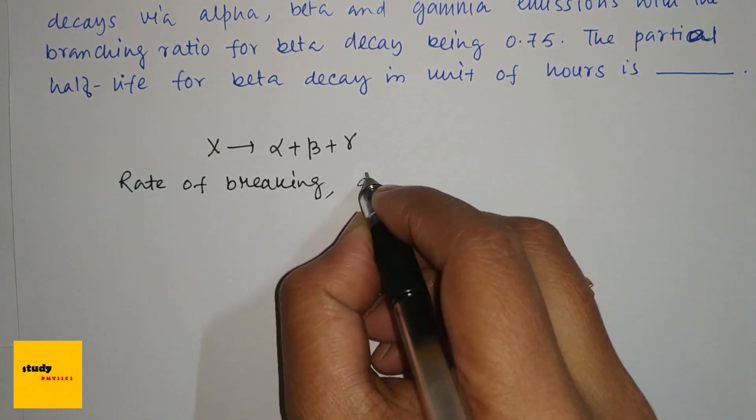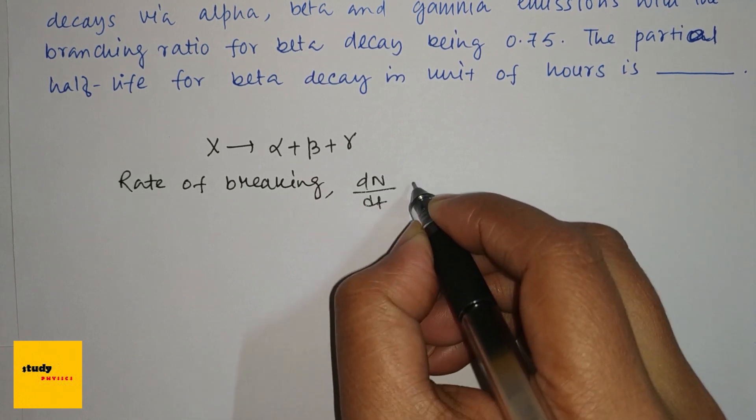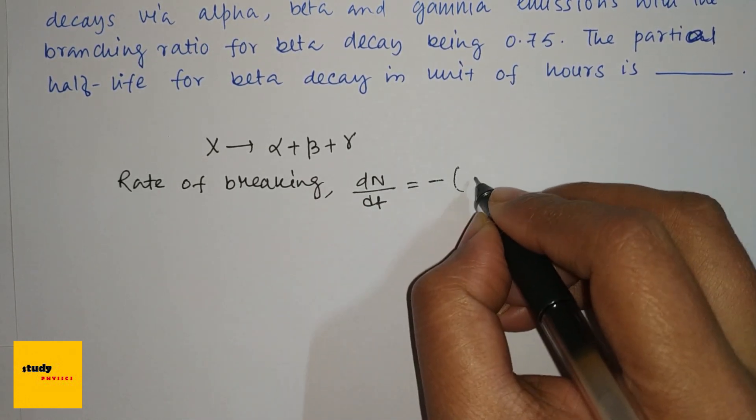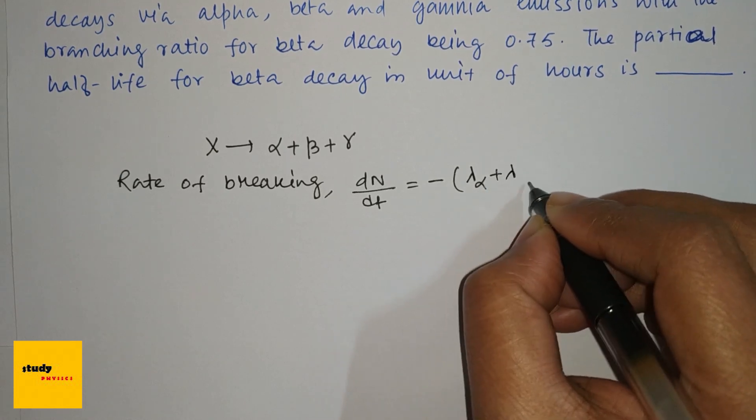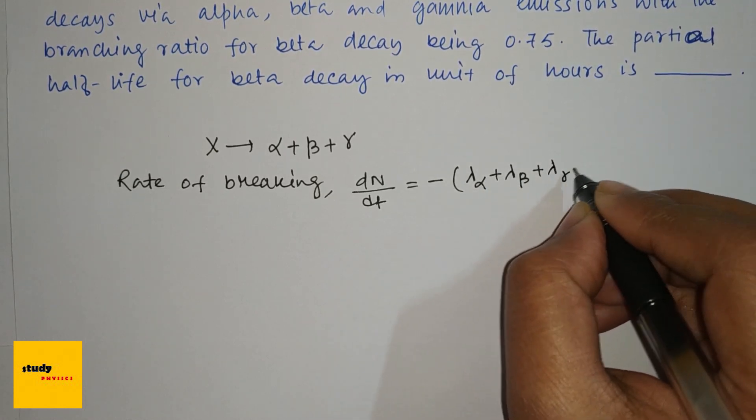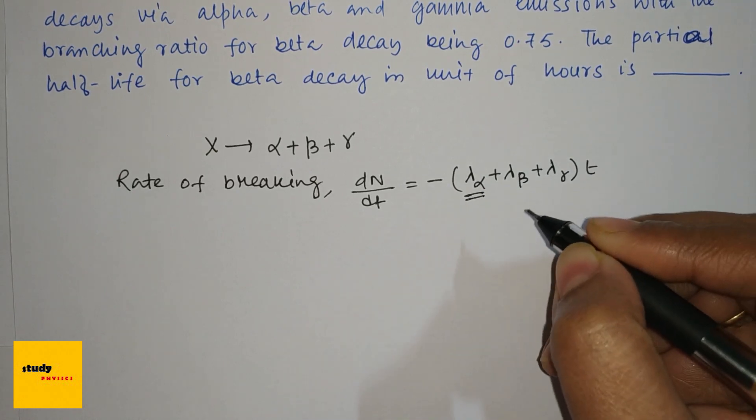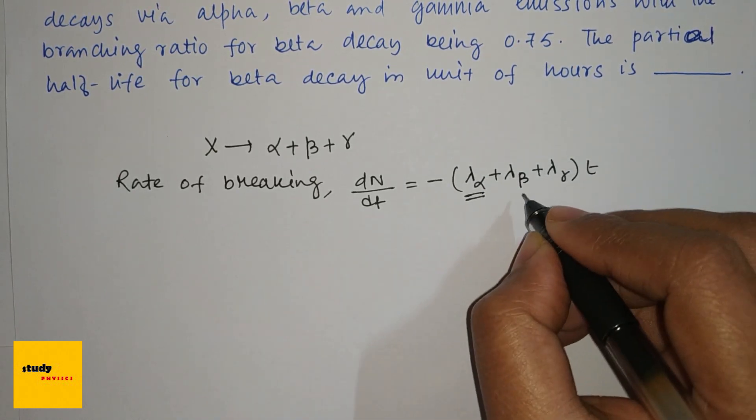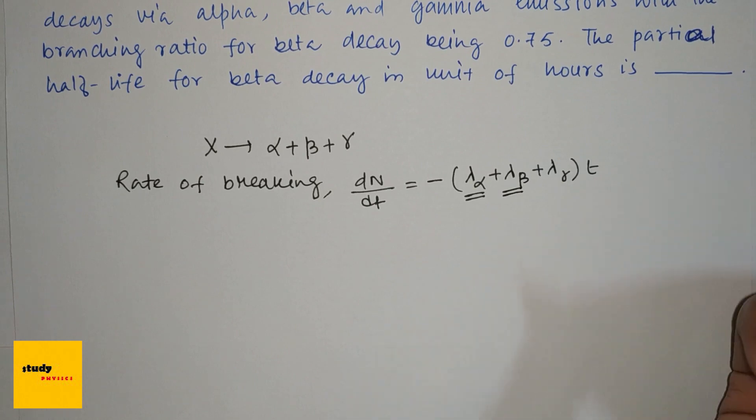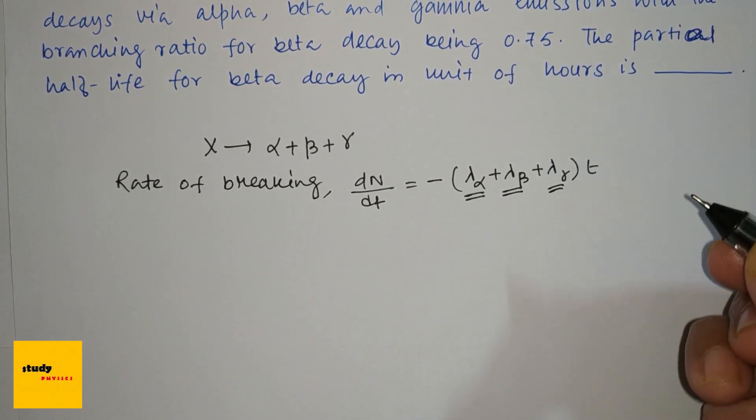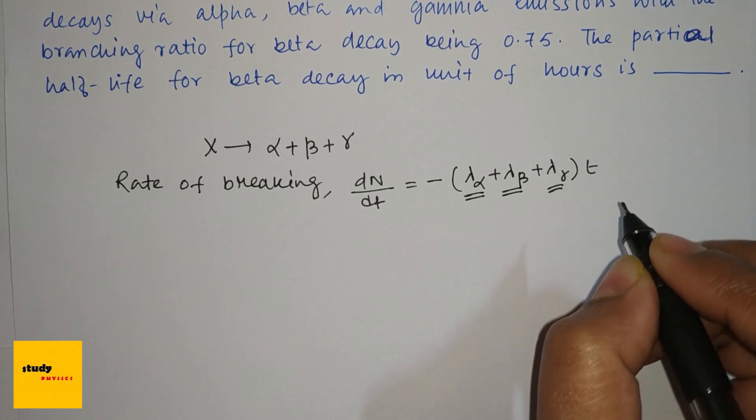The rate of breaking, dN/dt, equals minus (lambda alpha plus lambda beta plus lambda gamma) times N, where lambda alpha is the decay constant for alpha decay, lambda beta is the decay constant of beta decay, and lambda gamma is the decay constant of gamma decay.